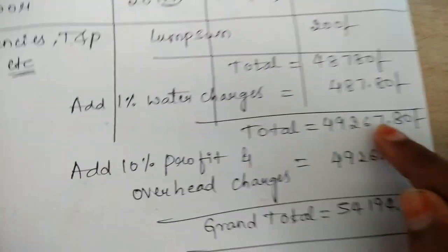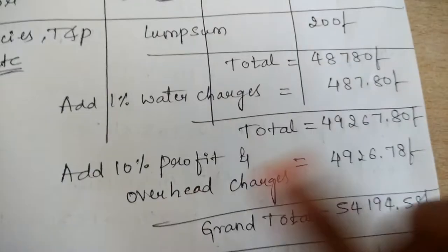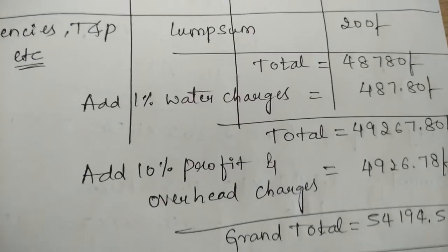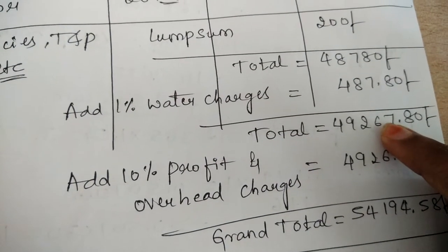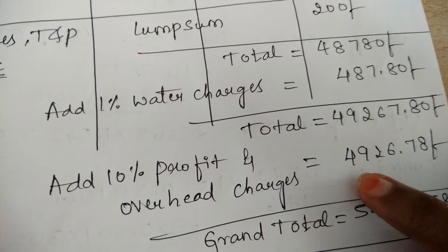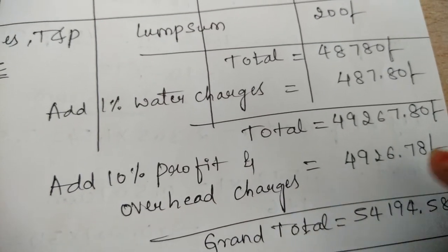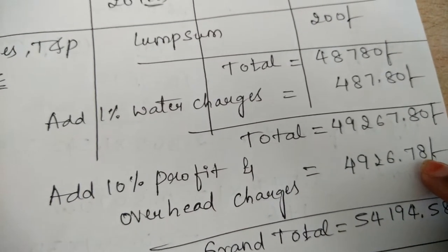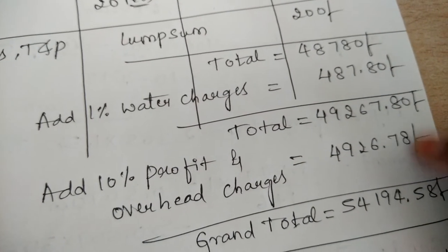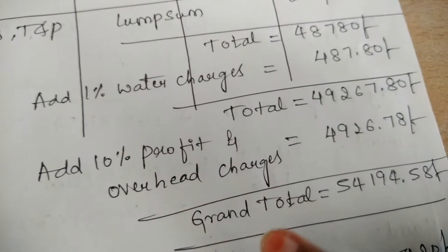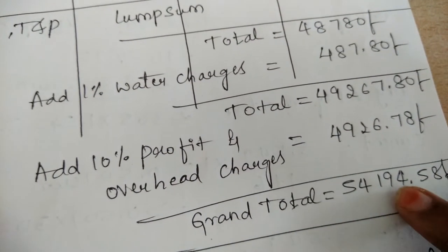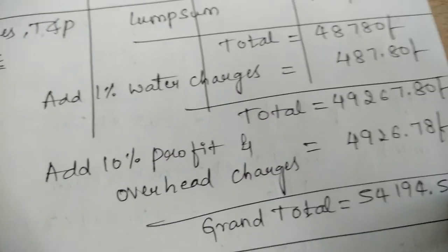For this new amount, we add 10 percent profit charges and overhead charges. Ten percent of this amount gives 4,926 rupees 78 paise. Finally, on adding these two amounts, you get a grand total of 54,194 rupees 58 paise.